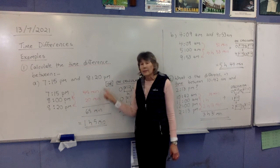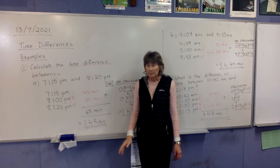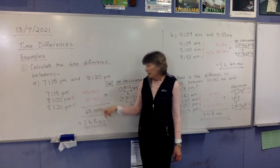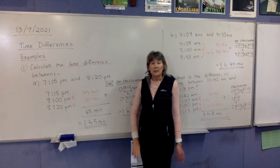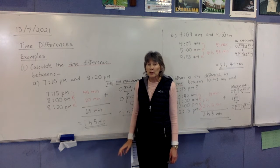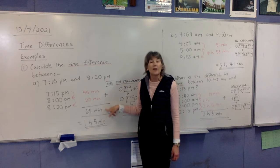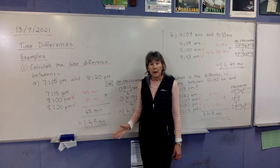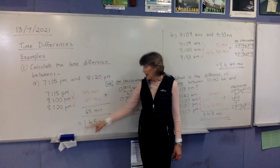Now we have to add these two red times together. You might just do that on your calculator: 45 plus 20 gives you 65 minutes. On a question like this, 65 minutes is fine. But some questions will say 'give your answer in hours and minutes,' so you need to know that 65 minutes is actually 1 hour 5 minutes — because there are 60 minutes in 1 hour, and then we've got 5 minutes after that.